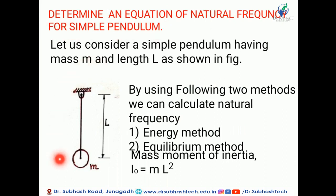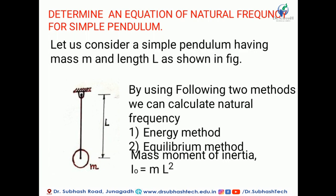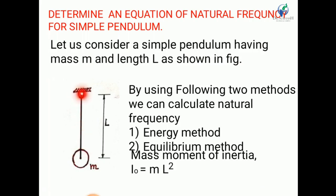A simple pendulum is given where a mass M is attached to a string that is pivoted at a fixed point. When we displace the mass, the pendulum oscillates. We consider a simple pendulum having mass M and length L, with a massless string. We can calculate the natural frequency using two methods: the energy method and the equilibrium method.